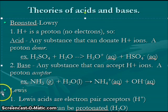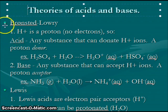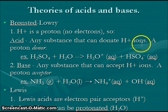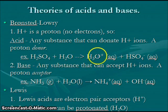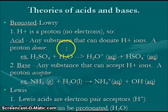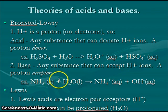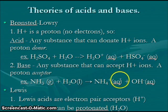The Bronsted-Lowry theory says that acids are substances which produce hydrogen ions when they dissociate in water, making an acid a hydrogen ion donor or proton donor. For example, sulfuric acid H2SO4 dissolves in water to produce hydronium ions and a bisulfate or hydrogen sulfate ion. A base is defined as a substance which can accept hydrogen ions — a proton acceptor. Ammonia can be classified as a base under this theory, but not under the Arrhenius theory. NH3 dissolved in water produces the ammonium NH4⁺ ion and hydroxide ions, giving it its basic behavior.